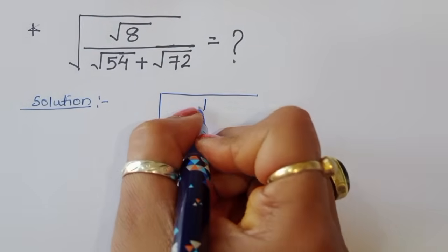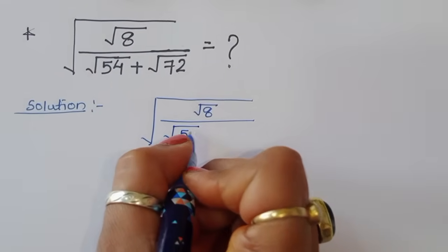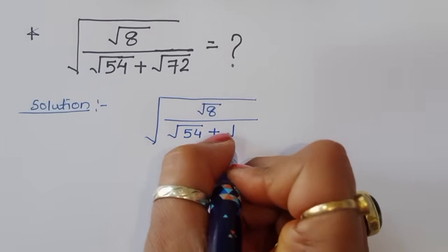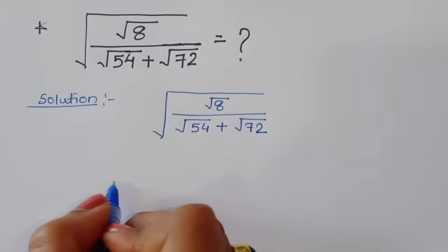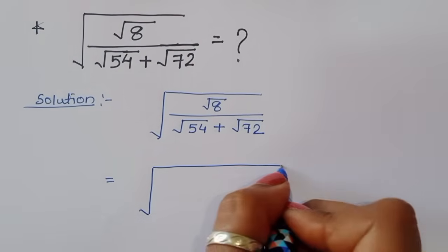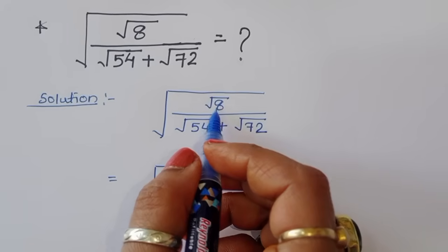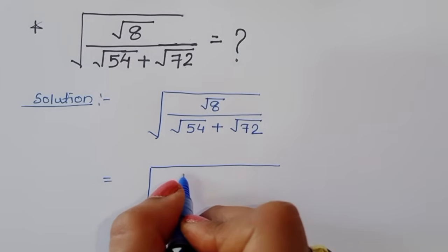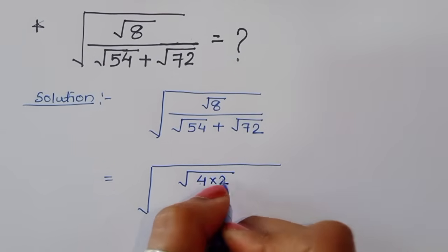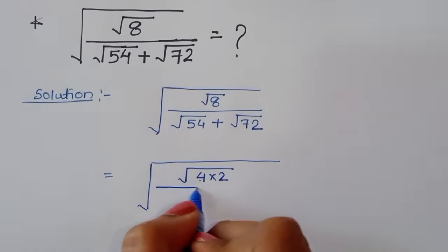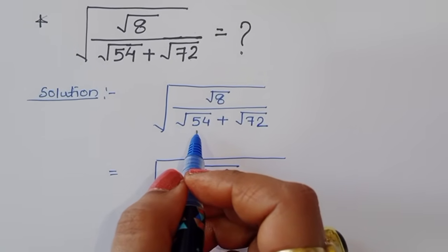The question is: square root of 8 divided by square root of 54 plus square root of 72. Now, square root of 8 — if we do the factoring of 8, we get 4 times 2. So we write square root of 4 times 2.